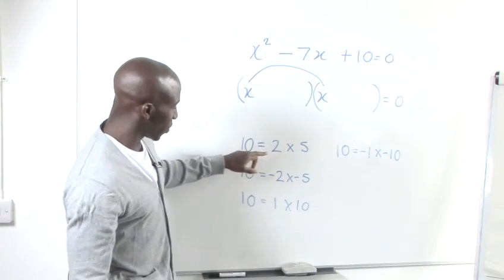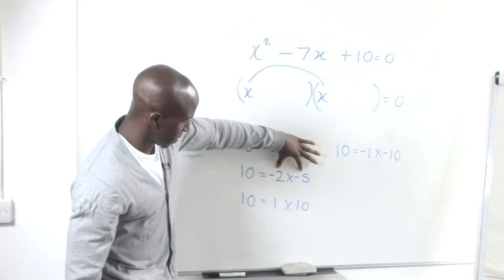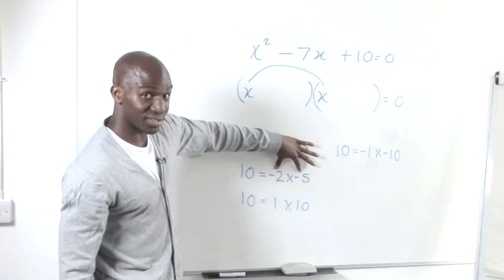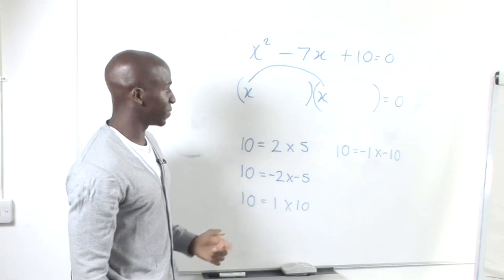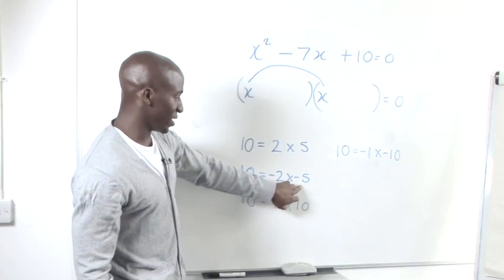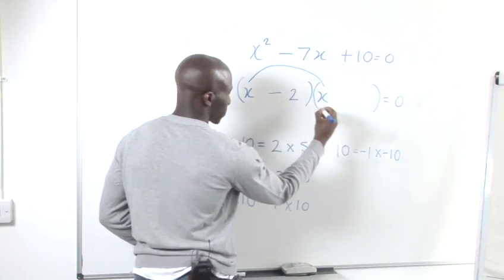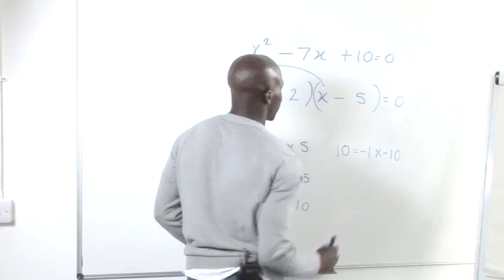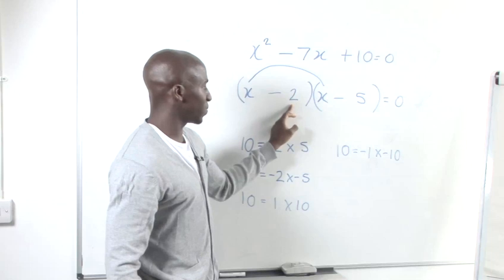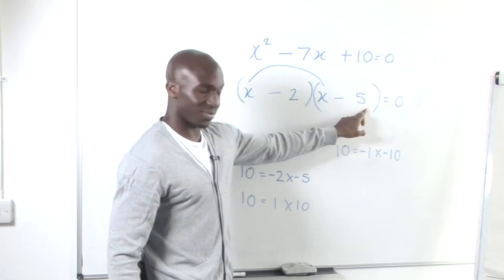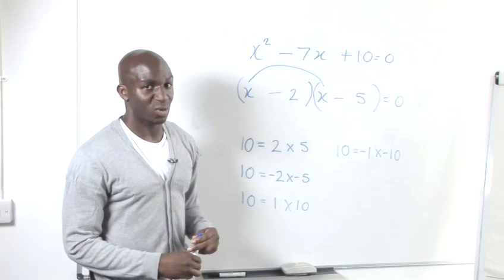So if we look at all of these, we notice that this particular multiplication has the factors that we need, because negative 2 plus negative 5 produces negative 7. So we can directly insert these two numbers into our brackets here. We've got negative 2 and negative 5. Now if you look at this, we have our factors: x minus 2 times x minus 5, and those are our two factors for this equation. And that's basically how to factor quadratic equations.